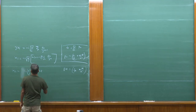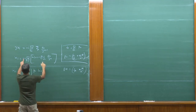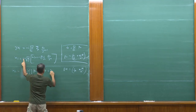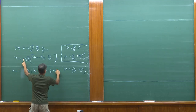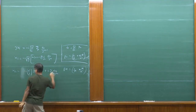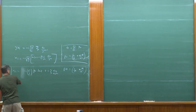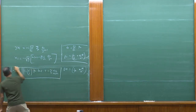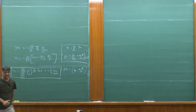Let's work out the zero mode part. The zero mode part is alpha prime over 2, with a minus i times p_L times log z. And then plus i sum over m, alpha m over m, z to the power m. This is our final expansion for the x field.